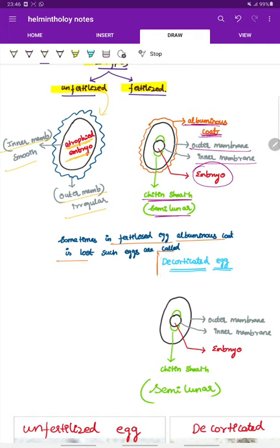Such eggs are called decorticated eggs. This is a representation of the decorticated egg. There is an outer membrane, inner membrane, embryo with chitin sheath, but only the albuminous coat is lacking. There is no albuminous coat surrounding the outer membrane.